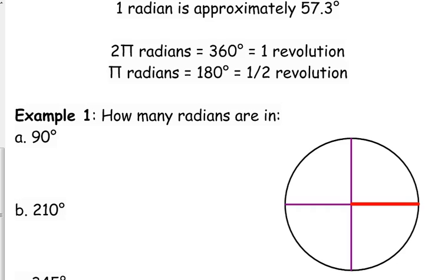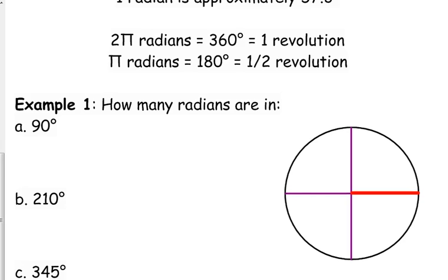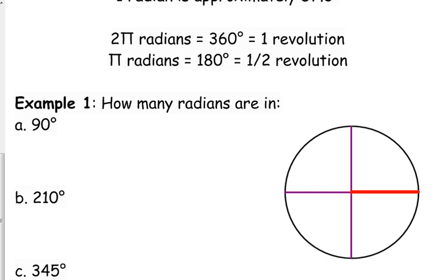For example: how many radians are in 90 degrees? On the circle, we always start on the positive x-axis — that's the thicker red mark on your paper. 90 degrees would be the vertical line shown. Thinking about it logically, that's half of pi — so it is pi over 2. Now let me show you how to convert when it's not something nice and neat.